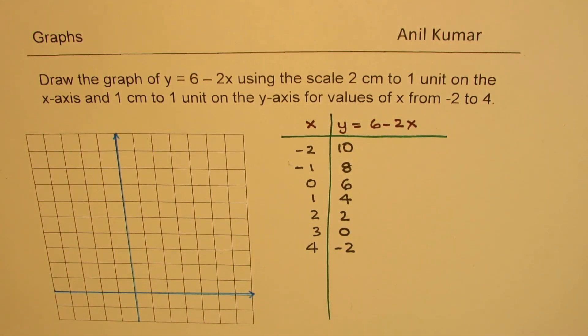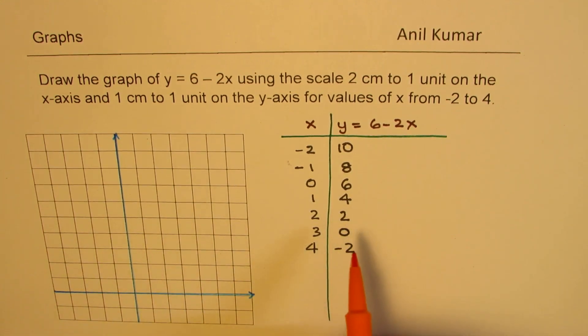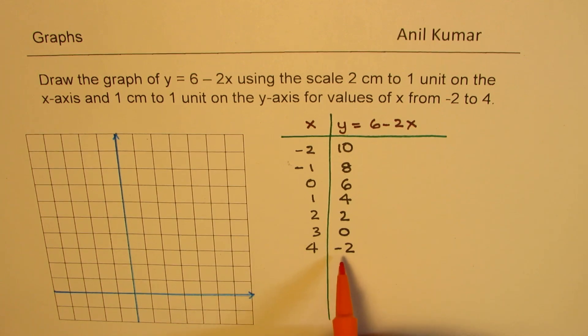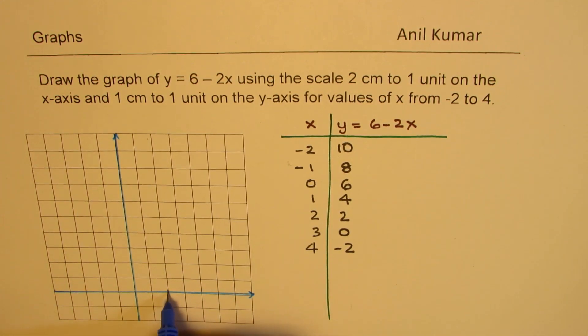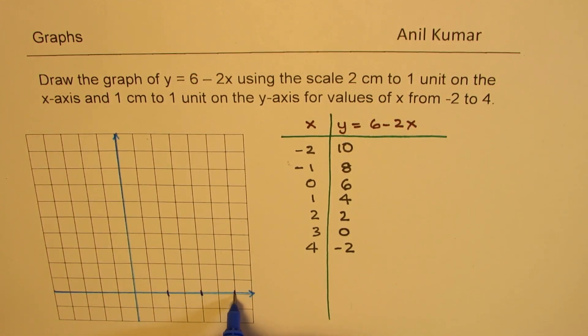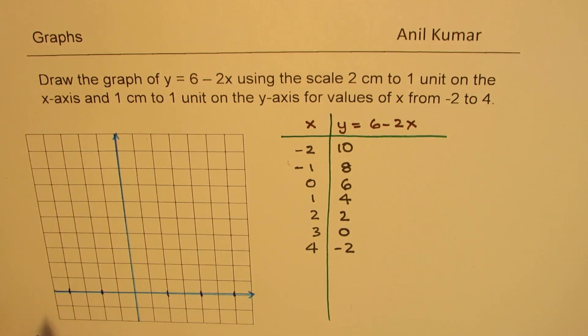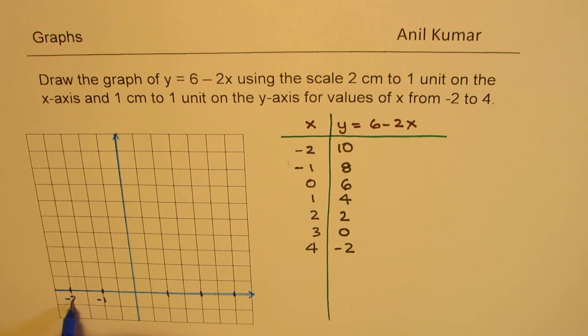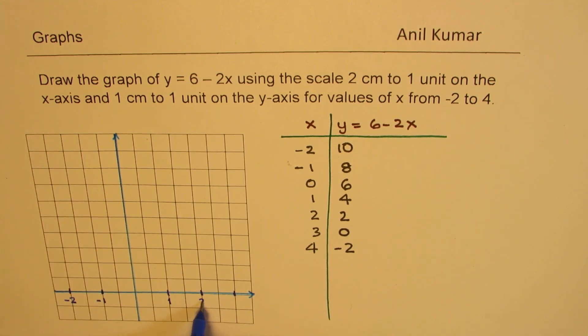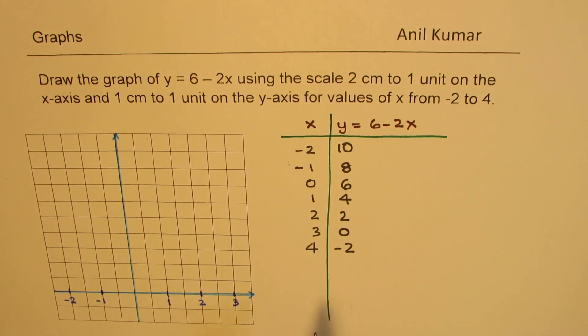Let's plot the points and then connect them. So we have at 4, the value is minus 2. So on the y-axis, the scale is 2 units is 1, right? So that is 2 units is 1. So this is minus 1, that is minus 2. Here we have 1, 2, and 3 only, correct? So we have a smaller graph paper, so we'll just go for what we have at present.